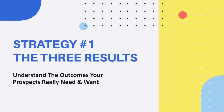Strategy one is about giving leaders what they want the most. There are just three results that your key decision-maker prospects want the most. They may not articulate them — they may describe other objectives and goals — but at the end of the day, if you can provide these three results and communicate how you're going to provide them, you'll have a much higher likelihood of that prospect becoming a client faster and easier.